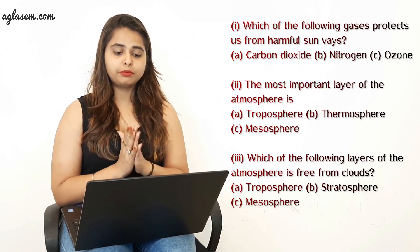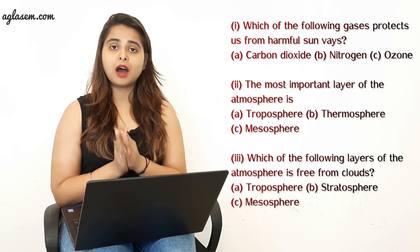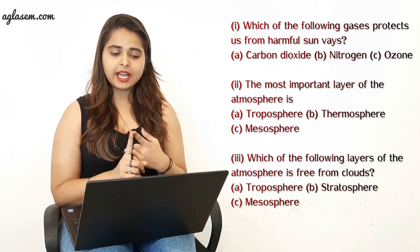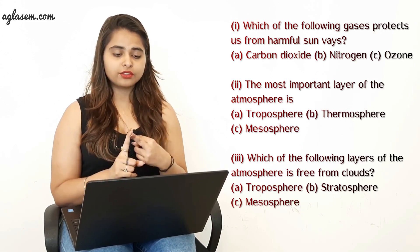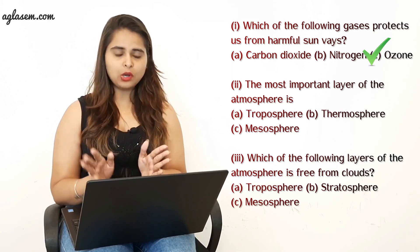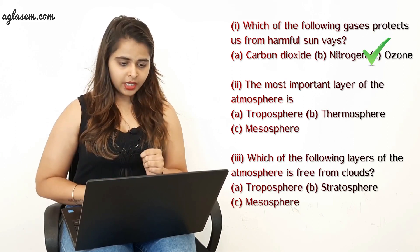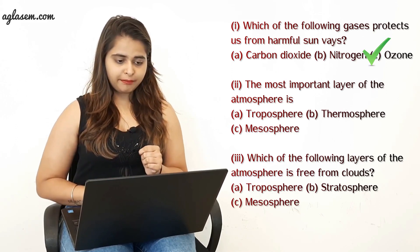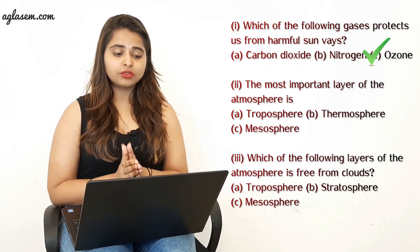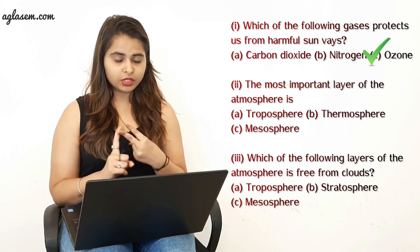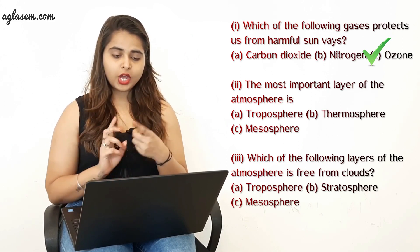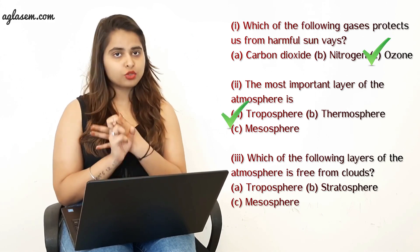Coming towards the second question — tick the correct answer. First part: Which of the following gases protects us from harmful sun rays? The options are carbon dioxide, nitrogen, and ozone. The correct answer is C — ozone. Second part: The most important layer of the atmosphere is troposphere, thermosphere, or mesosphere? The answer is troposphere.